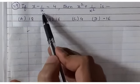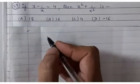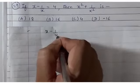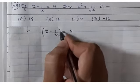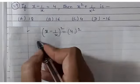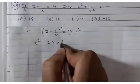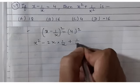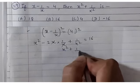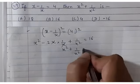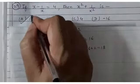Question number 29: if x − 1/x = 4, find x² + 1/x². Square both sides: (x − 1/x)² = 16, which gives x² − 2 + 1/x² = 16. So x² + 1/x² = 16 + 2 = 18. Answer is A.